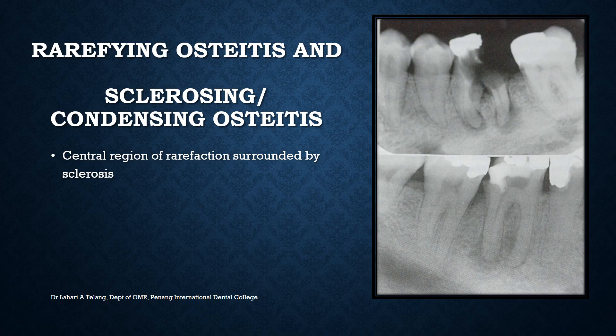A typical picture shows radiolucency at the center and radiopacity at the periphery. If the opacification is larger than the radiolucency, we call it condensing ostitis; if the radiolucency is larger than the opacification, we call it rarefying ostitis. But at the end of the day, essentially both teeth would require endodontic treatment or extraction.